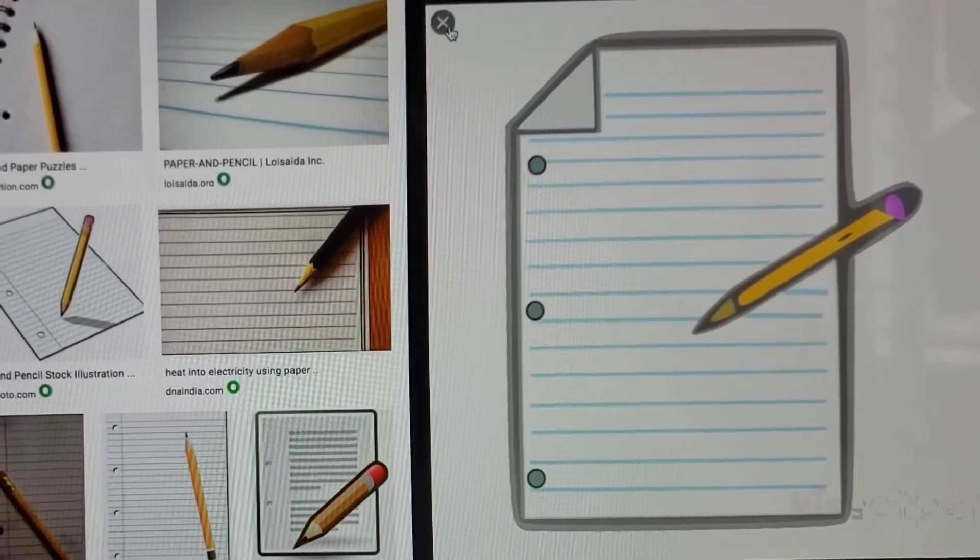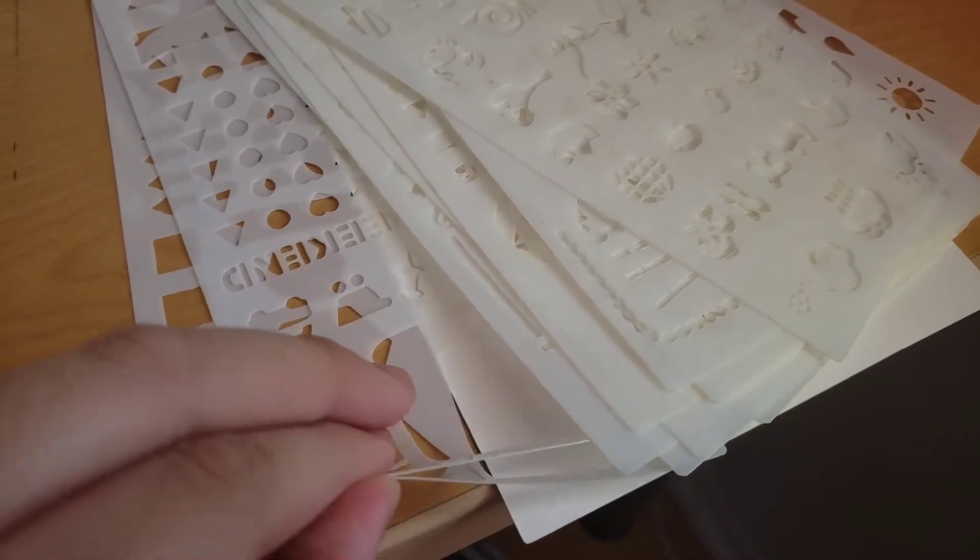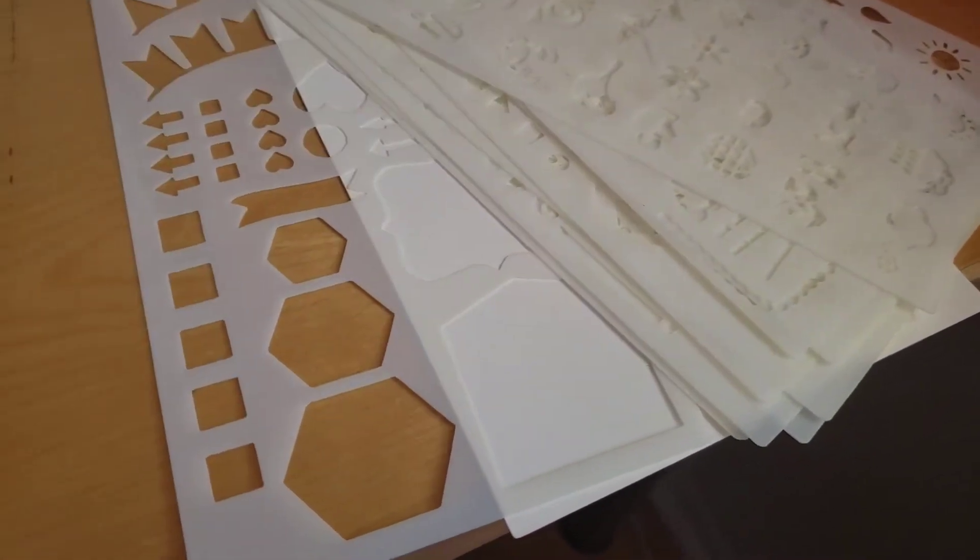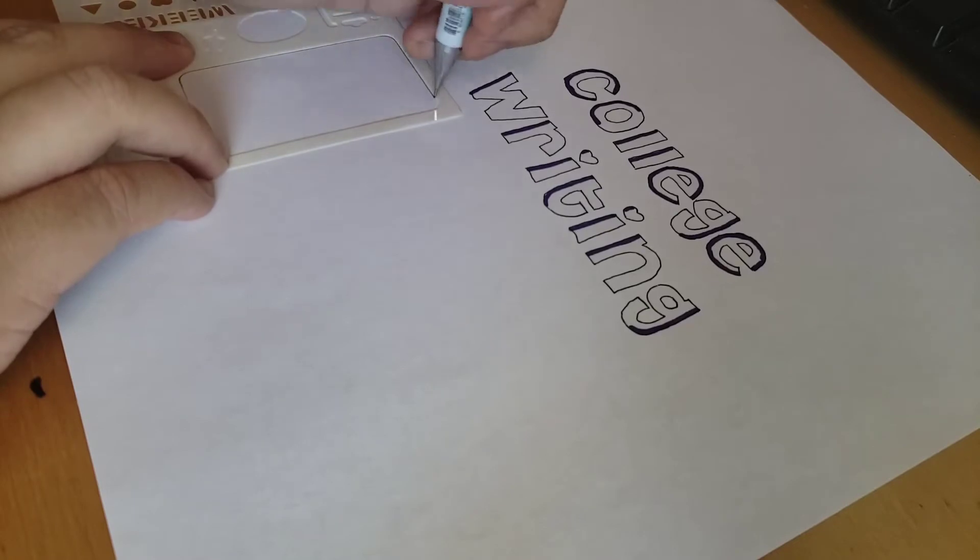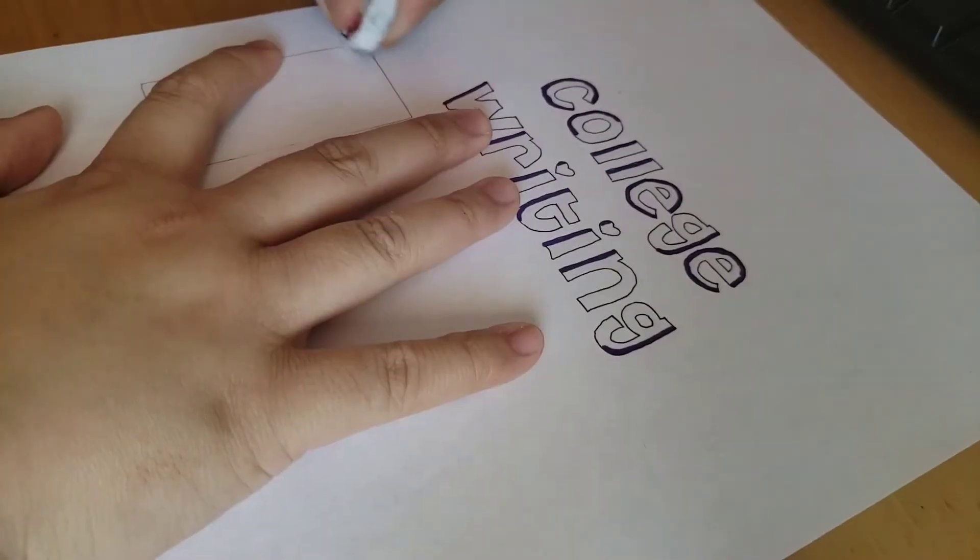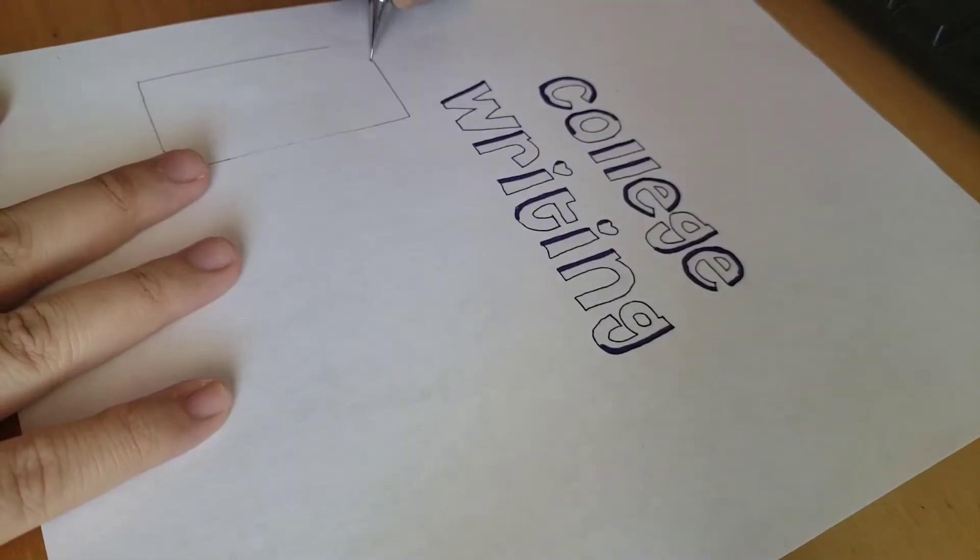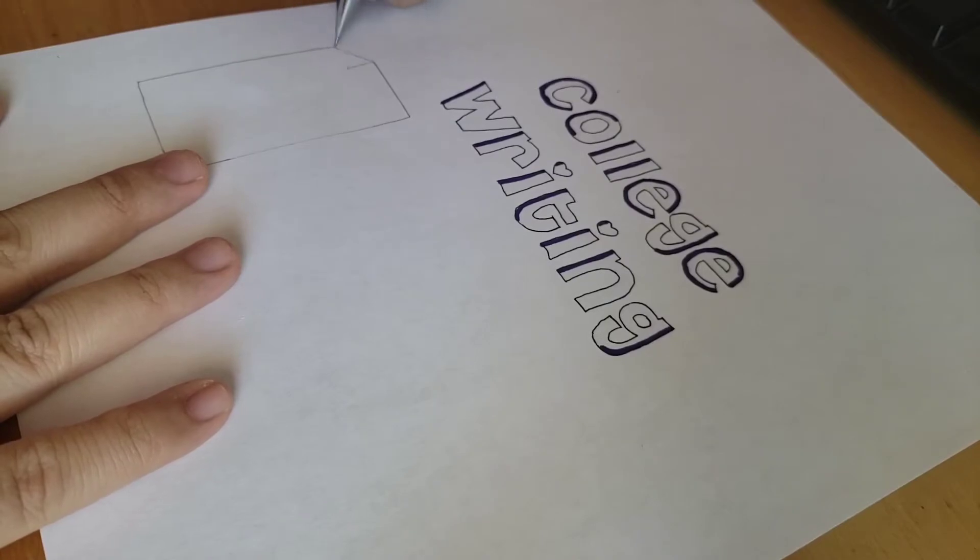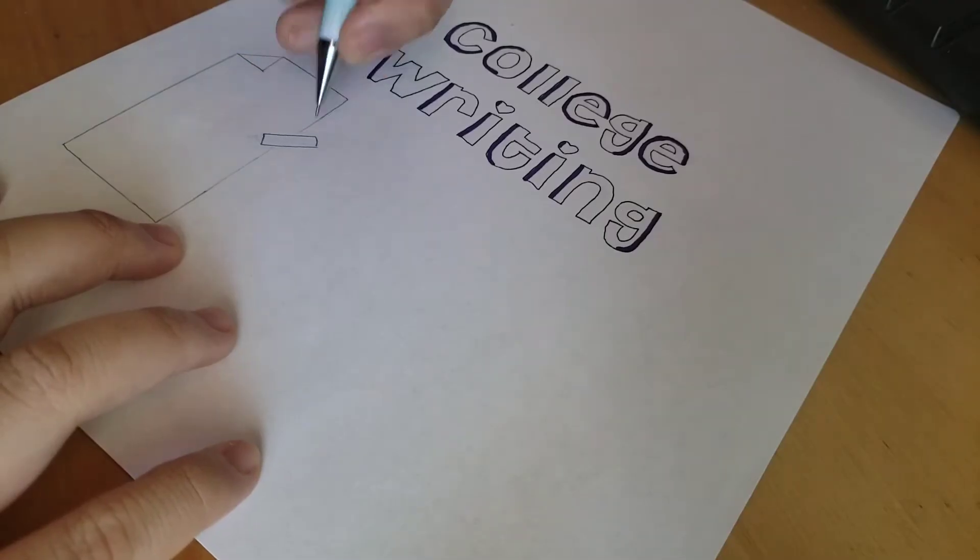But since I have my stencils, I would get one of them out and trace it onto a sheet of paper. I erased the corner so that I could draw a folded part, and then I drew a pencil to go with it.